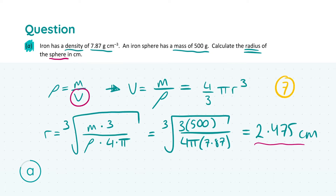For this question there were 7 marks total. You get 3 marks for getting your formulas correct — either rho equals M over V, or 4/3 π r cubed. Then 2 marks for calculating the volume and 2 more marks for calculating the radius. We did it all in one step by rearranging to find r on its own. If you found V first and then rearranged separately, you'd still get the marks in two separate places. Either way, you get your total of 4 marks for those steps.